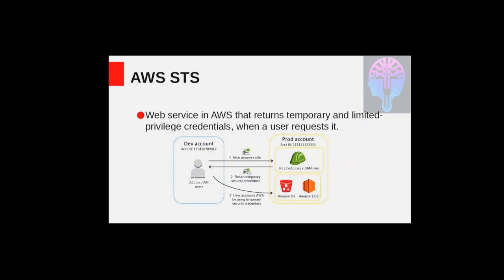Moving on to what AWS STS is: AWS STS is a web service that provides temporary credentials to a user when a user requests for them. We all know that whenever we want to access S3 resources in AWS we need to have permanent credentials at hand, but AWS also provides an alternative method of getting back some temporary credentials to access the same S3 resources. This talk is mainly about what we have done in CEPH Object Gateway to support STS.